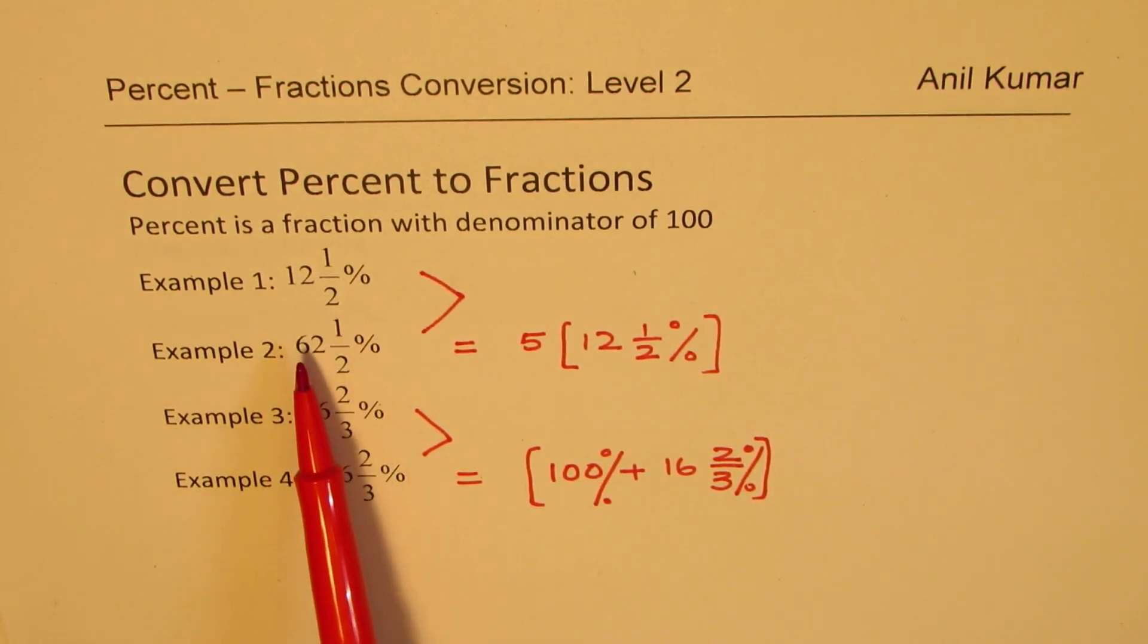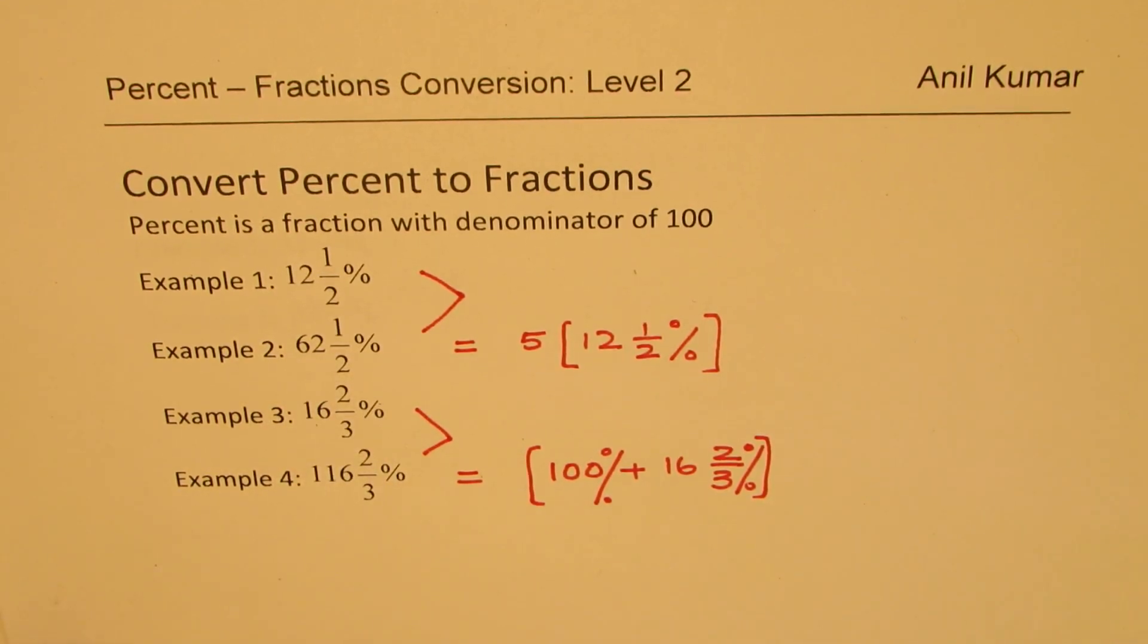In this case also, we will see how when we calculate 12 and a half percent, we can also write down the result for 62 and a half percent. So let's begin and see the steps involved in converting these complicated percents to simple fractions.